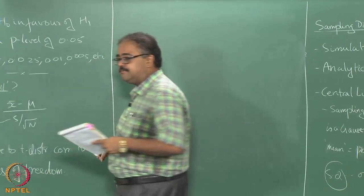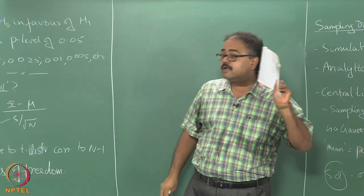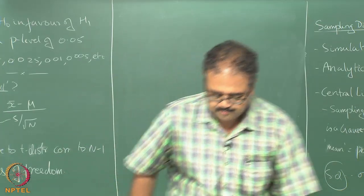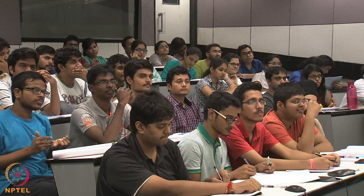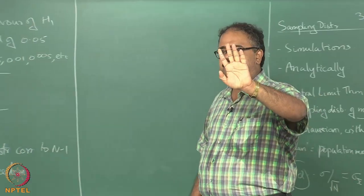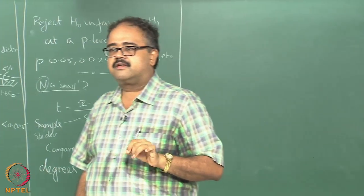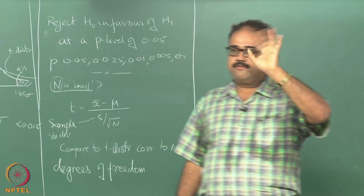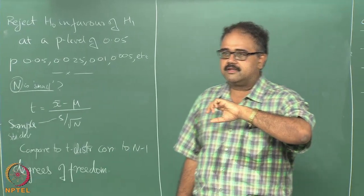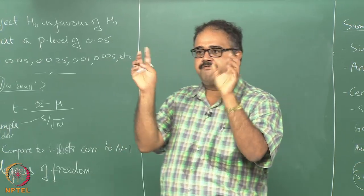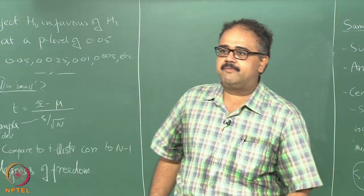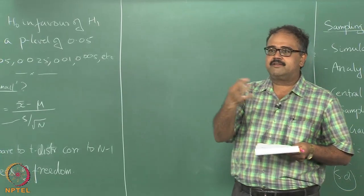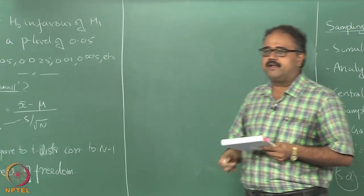Moving on. Very roughly: suppose I give you the mean and I give you n minus 1 samples — you can construct the nth sample from those. So you have only n minus 1 free things that you can set in the system; the nth one will be determined. That is what n minus 1 degrees of freedom means. There is a more formal definition, but intuitively it is about how many independent factors you can set in the system.